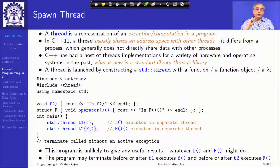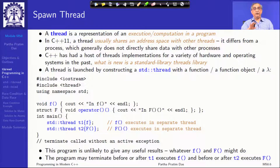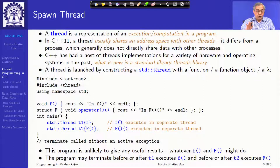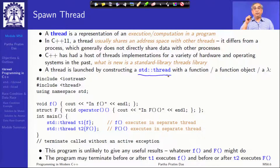What is special about C++11 in the context of thread programming? From C++11 onwards, the standard library itself provides complete support for multi-threaded programming. You do not have to use a third-party library like POSIX. Using the primary thread component in the library, you can launch a thread with a function, a function object, or even a lambda.